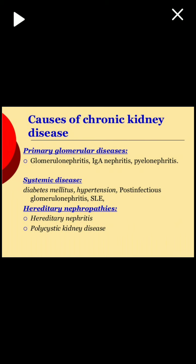The causes of chronic kidney disease include around 4 to 5 different types. The most commonly affected cause is glomerular disease. The kidney histology is made up of glomerular structures and ducts — PCT, DCT, and collecting ducts. Glomerular disease causes include glomerulonephritis, IgA nephritis, and pyelonephritis. Systemic diseases such as diabetes mellitus, hypertension, post-infectious glomerulonephritis, and systemic lupus erythematosus also contribute. Hereditary nephropathies include hereditary nephritis and polycystic kidney disease.